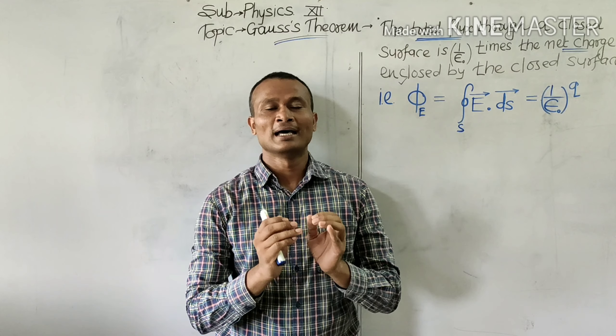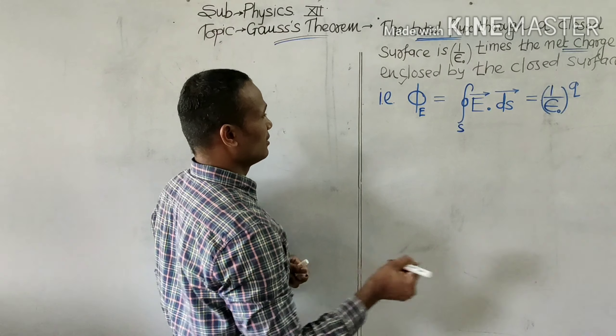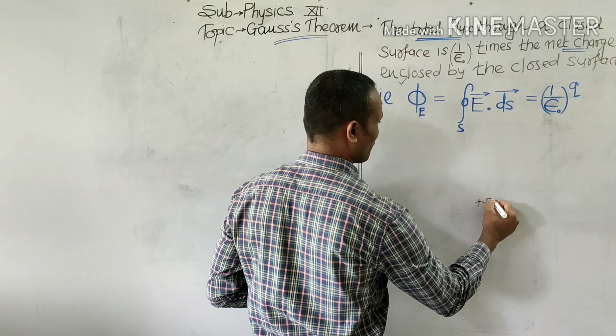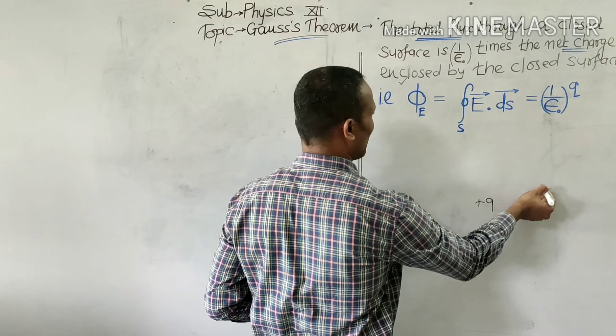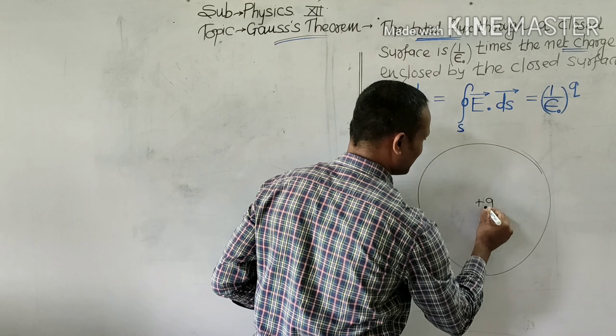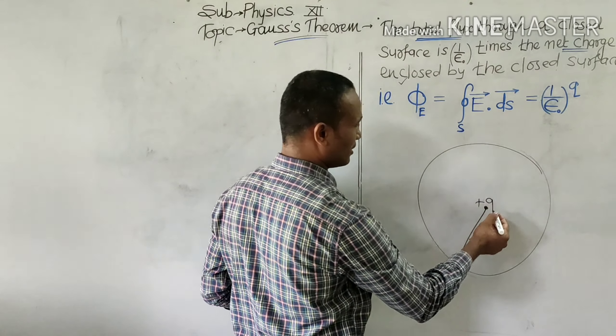So let's verify the same. For that we will consider a charge, say for example positive charge. And we will draw a sphere of radius R around it, being the charge at its center. Suppose R is the radius, so R is the radius of that sphere.